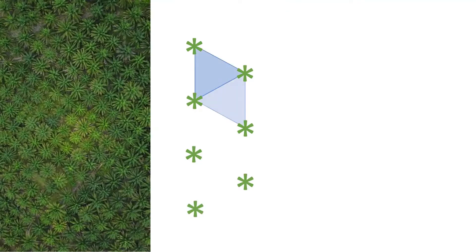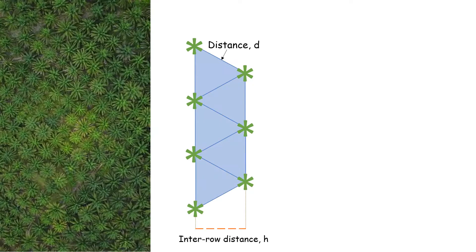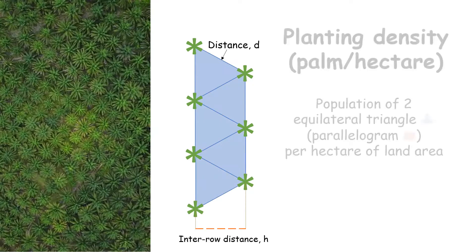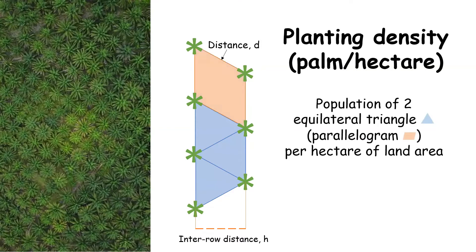Oil palm trees are planted in an equilateral triangle pattern, as you see here, with a distance d and an inter-row distance h. Therefore, planting density also refers to the population of two equilateral triangles, or a parallelogram, per hectare of land area.